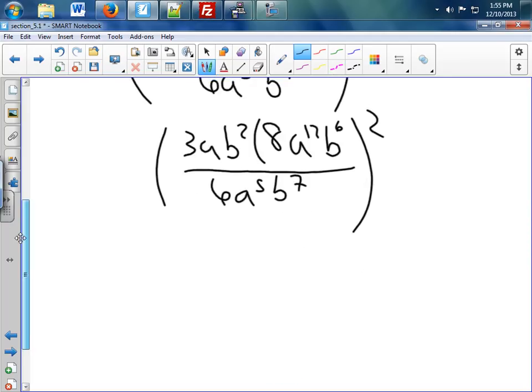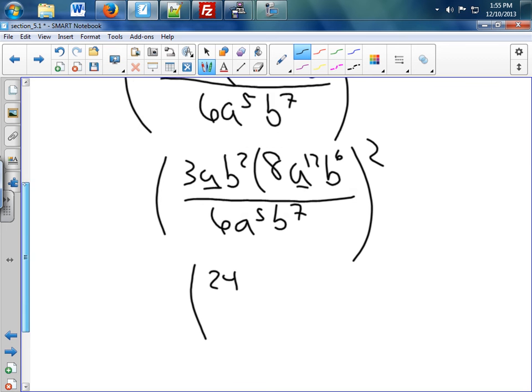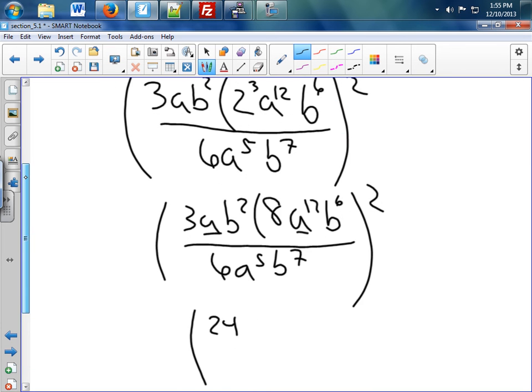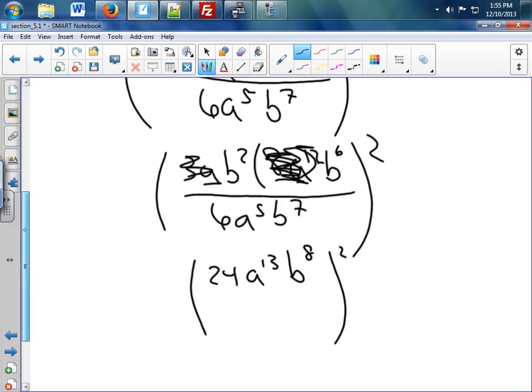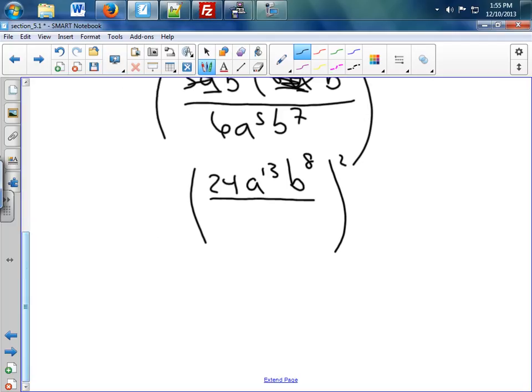Now at this point there's many routes you can take. I'm a firm believer in simplifying first. So, what I'm going to do is I'm going to take the 8 times the 3, and I'm going to get 24. I'm going to take the 8 times the A, that's A to the 12th. A to the 13th takes care of this. And then I get B to the 8th squared. On the bottom, I'm going to get 6A to the 5th, B to the 7th.